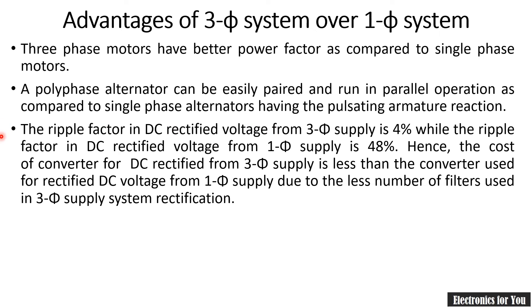The ripple factor of a DC rectified voltage from a three-phase supply is approximately four percent, while in case of a single-phase supply it is 48 percent.